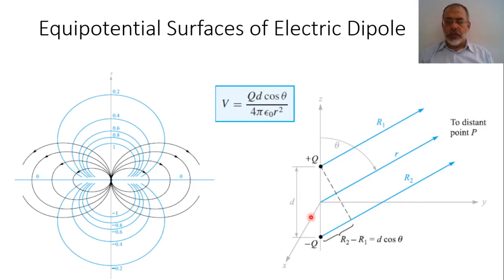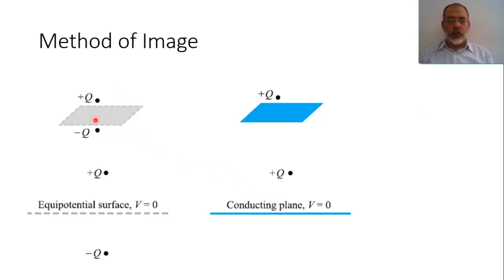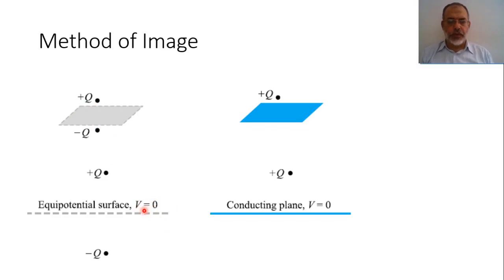The x-y plane in this case is an equipotential surface which has a potential equal to zero. This configuration can be replaced by assuming that we have such a dipole and we insert an equipotential surface of potential equal zero at the center, or the mid-distance between the two charges positive Q and negative Q, and we have the same result.